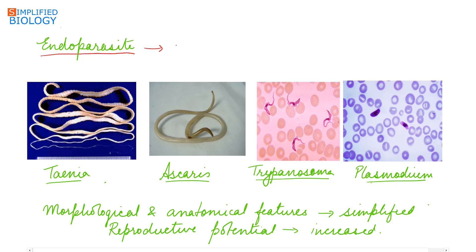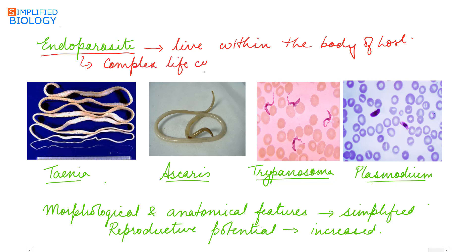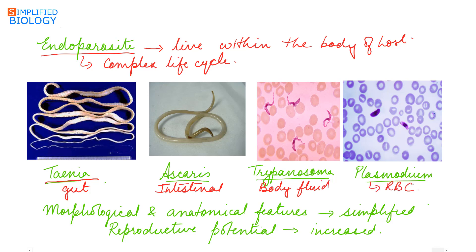Endoparasites live within the body of the host at different regions such as the liver, kidney, lungs, and red blood cells. They have a complex life cycle and are highly specialized. Examples include Taenia, which is a gut parasite; Ascaris, which is an intestinal parasite; Trypanosoma, a body fluid parasite; and Plasmodium, which grows in the RBCs of humans. These endoparasites have simplified morphological and anatomical features, while their reproductive capacity is increased to help them spread.